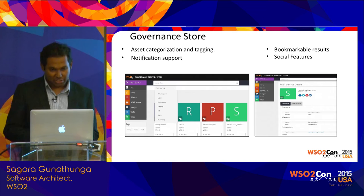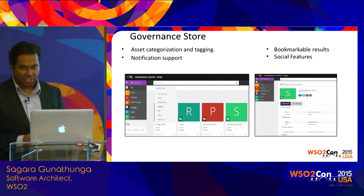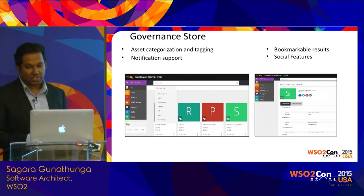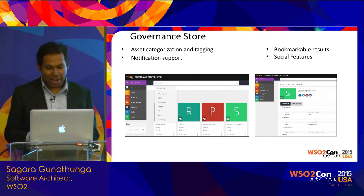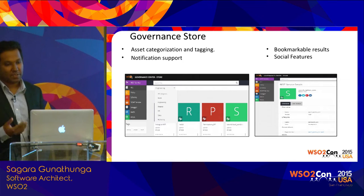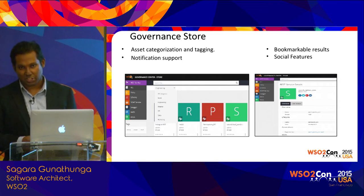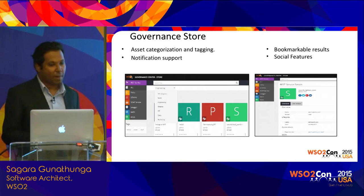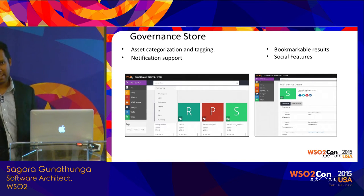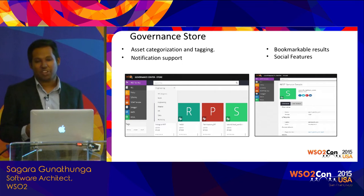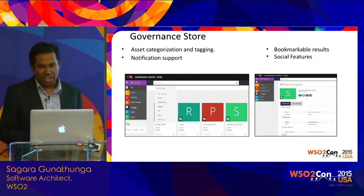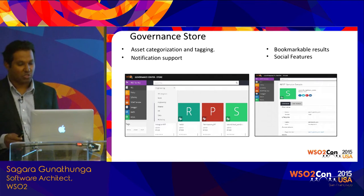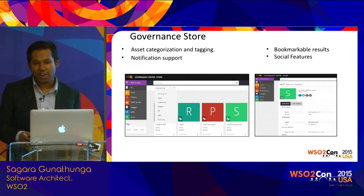Another thing we've introduced is asset categorization. Earlier we had no categorization at all. With 5.1.0 we introduced one level of categorization. Going forward, our path is to support any number of categorization levels, and you'll be able to define your own. That's the vision, but at the moment we have one level. You also have tagging — for overlapping assets, you can define tags.